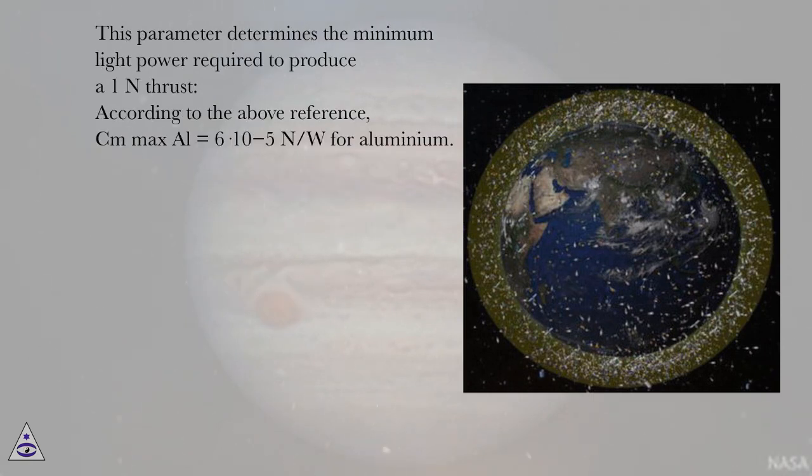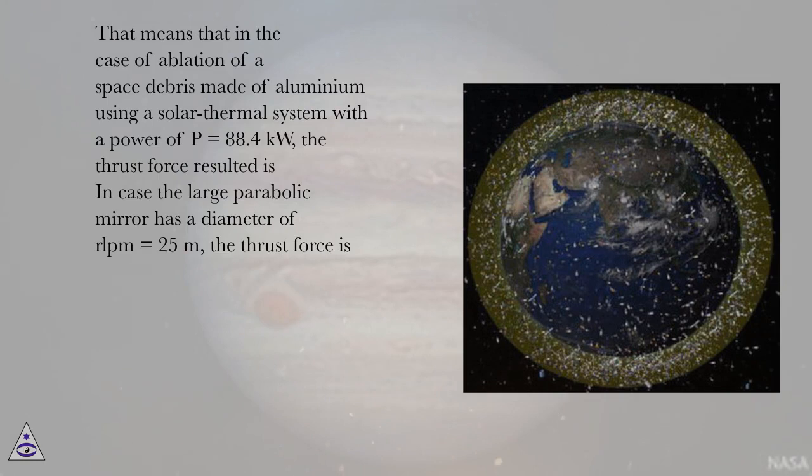This parameter determines the minimum light power required to produce a 1 N thrust. According to the above reference, Cm max λ = 6 × 10⁻⁵ N/W for aluminum. That means that in the case of ablation of